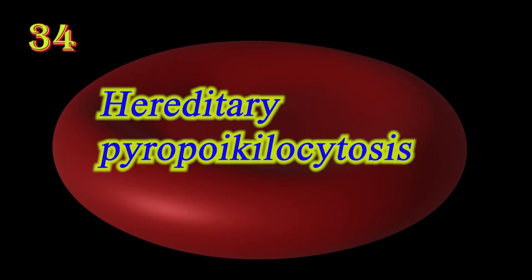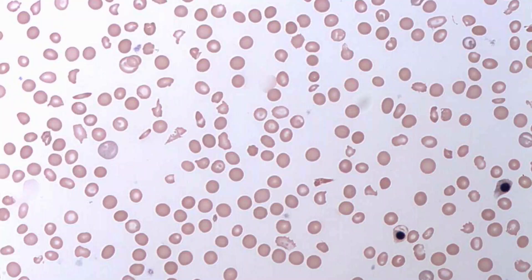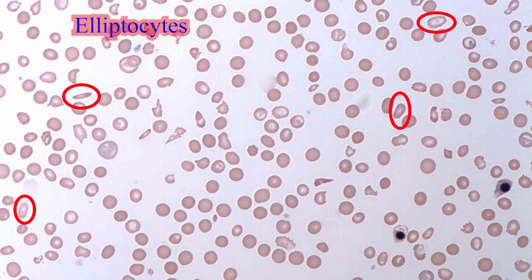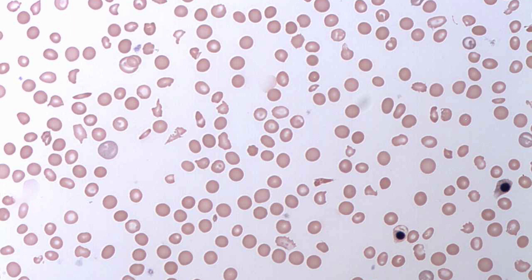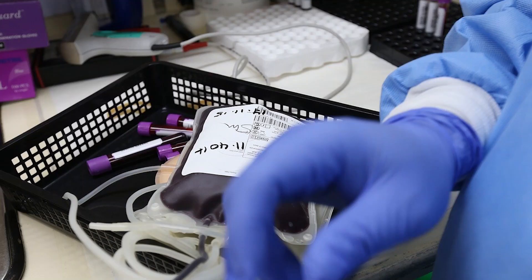Hereditary pyropoikilocytosis is characterized by increased poikilocytosis, RBC fragmentation, and elliptocytes in the peripheral smear due to a defect in the RBC membrane skeleton that weakens its horizontal scaffold, causing hemolysis. RBC hemolysis in infants causes neonatal jaundice and frequently requires transfusion.